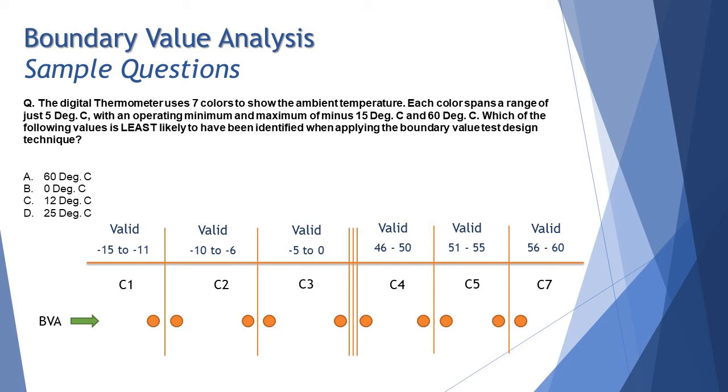So what is that we have to pick here from the options is we have got 60 degree, we have got 12 degrees, we have got 0, we have got 25. So of course 60 is one of our extreme boundary values so that will be considered. 0 is one of our boundary value in the third range.